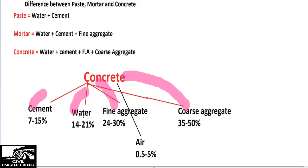This is the general overview of concrete — how much cement, water, fine aggregate, and coarse aggregate are used. To summarize: cement plus water is paste; mortar is water plus cement plus fine aggregate; and concrete is water plus cement plus fine aggregate plus coarse aggregate. That was today's topic. If you have any questions, please comment, share, and subscribe to our channel for more videos. Thank you.